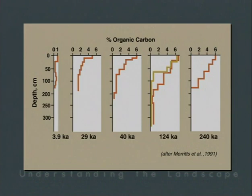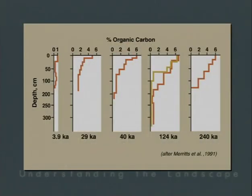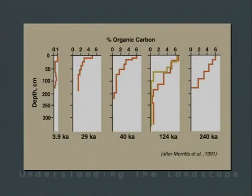Another example of Jenny's state factor approach evaluates time and its influence on soil formation — referred to as a chronosequence — where we look at organic carbon as a function of increasing soil age. Adapted from Meretz in 1991, with depth on the y-axis and organic carbon on the x-axis, five platelets show different-aged soils and their carbon storage. The general pattern is that carbon content increases with increasing age, going from 3,900-year-old to 240,000-year-old soils.